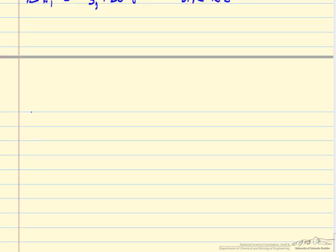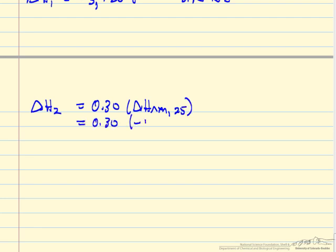The next term, delta H2 is due to the reaction, 30% conversion. We have 30% of the heat of reaction at 25 degrees C. This is minus 57 kilojoules per mole, we're reacting 3 tenths of a mole, so this is minus 17.1 kilojoules.